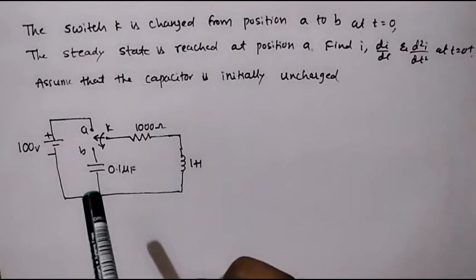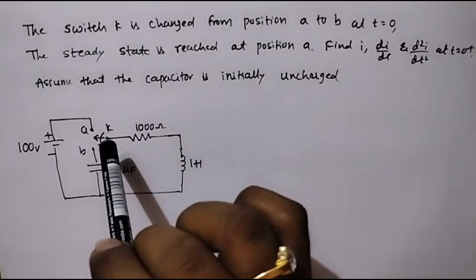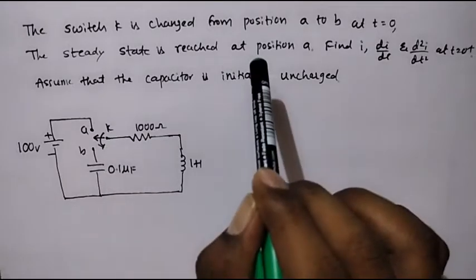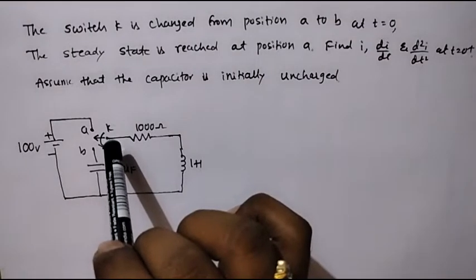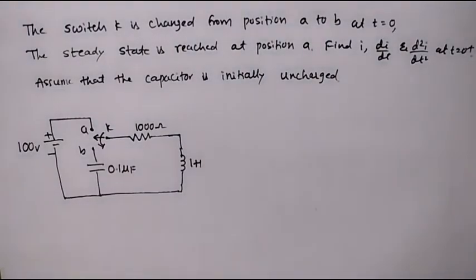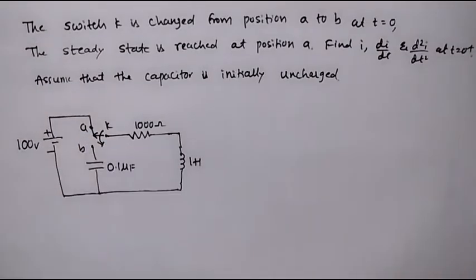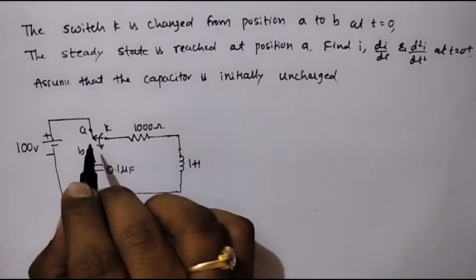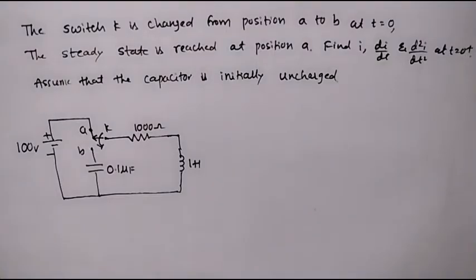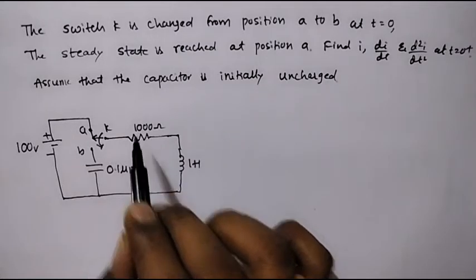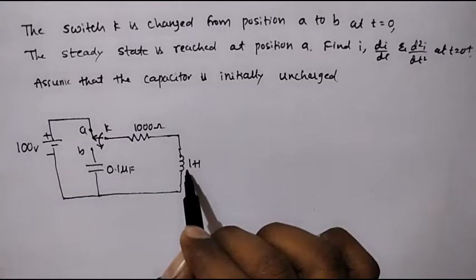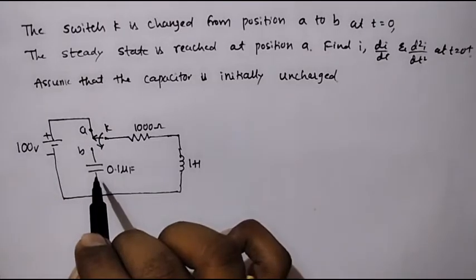We can observe that the switch K is given in the problem that the steady state is reached at position A. It means that when the switch K is connected to A, it has reached steady state. We know that in steady state, the resistor acts the same, the inductor acts like a short circuit, and the capacitor acts like an open circuit.